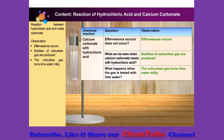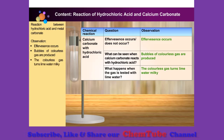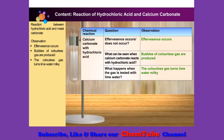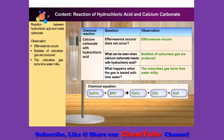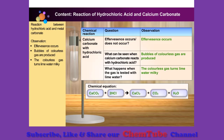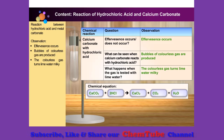The lime water turns milky when the gas passes through it, indicating that carbon dioxide gas is released. The reaction between hydrochloric acid and calcium carbonate produces calcium chloride, carbon dioxide, and water.